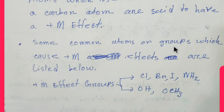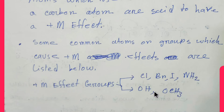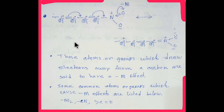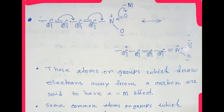Some common atoms or groups which cause positive M effects are listed. The key characteristic of these groups is that they all have a single bond connecting them to the ring. The presence of a single bond is the technique to identify whether a group will show a positive M effect or a negative M effect.